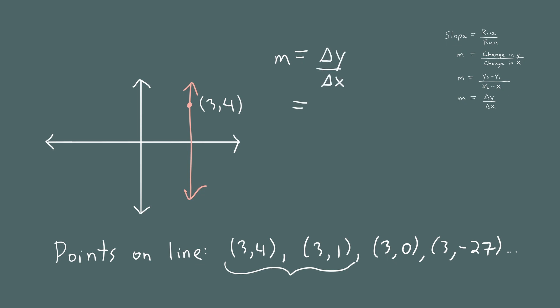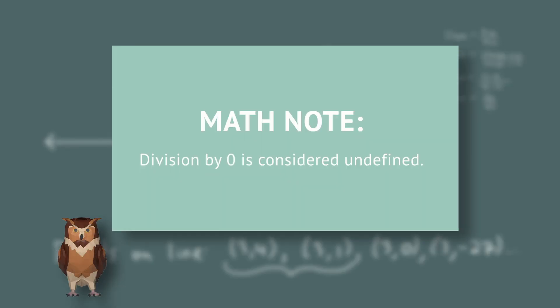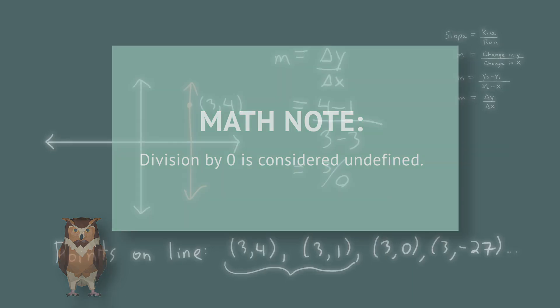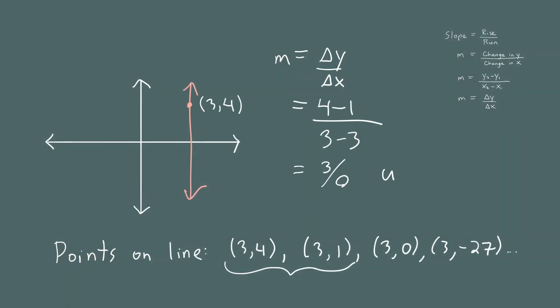The slope is the change in y over the change in x. The difference between the y's is 4 minus 1, and we divide by 3 minus 3. You can do the subtraction in either order, just be consistent — start the same way for both y and x coordinates. This gives us 3 divided by 0. Since you can't divide by 0 — it's undefined — the slope of a vertical line is undefined.